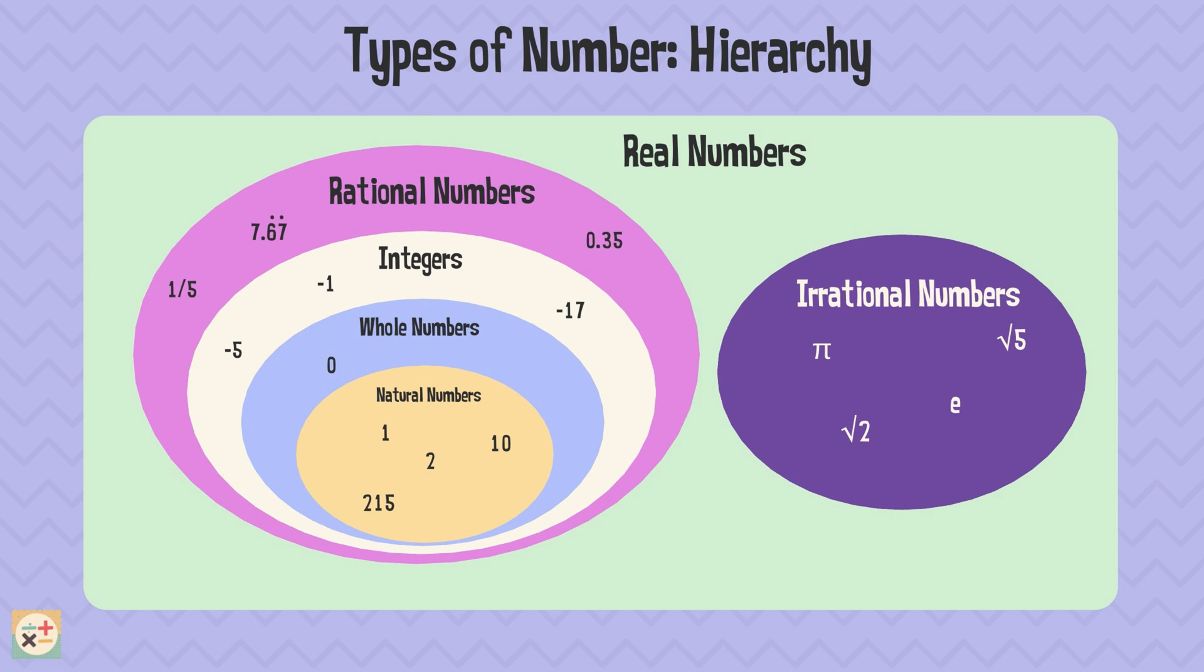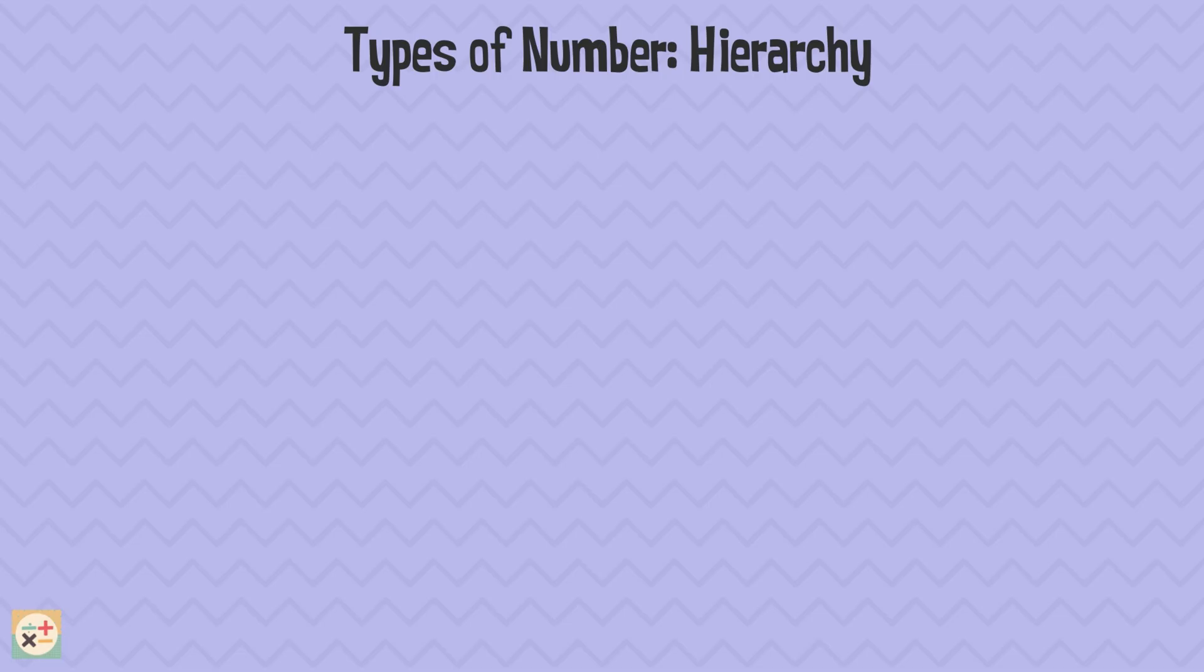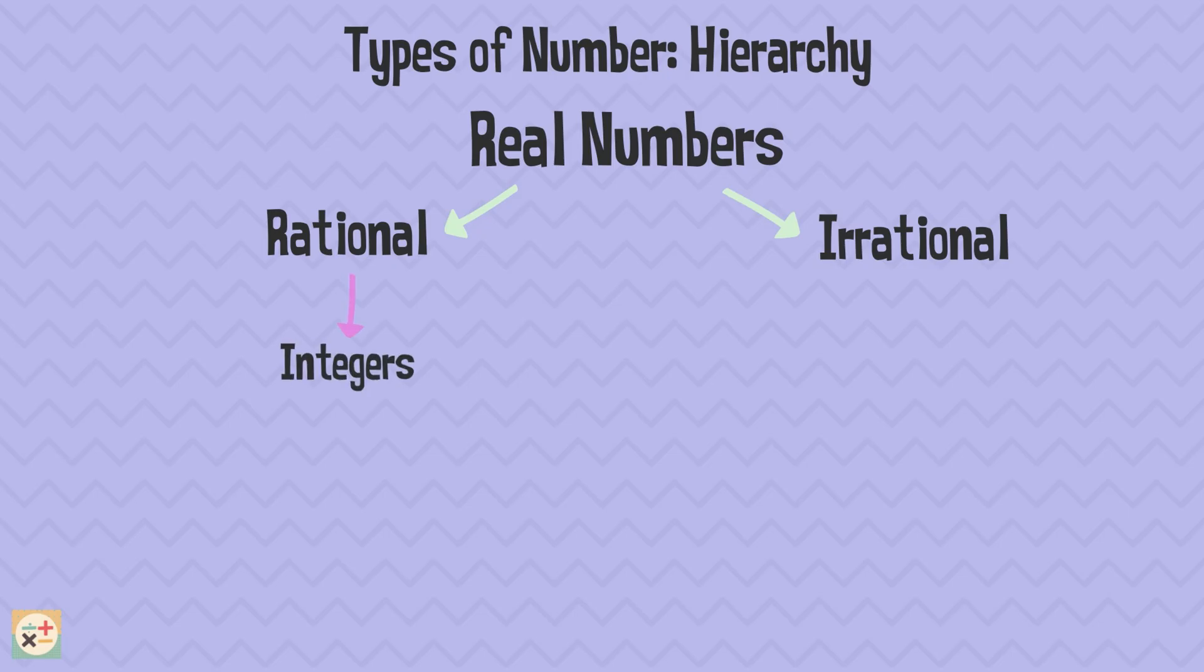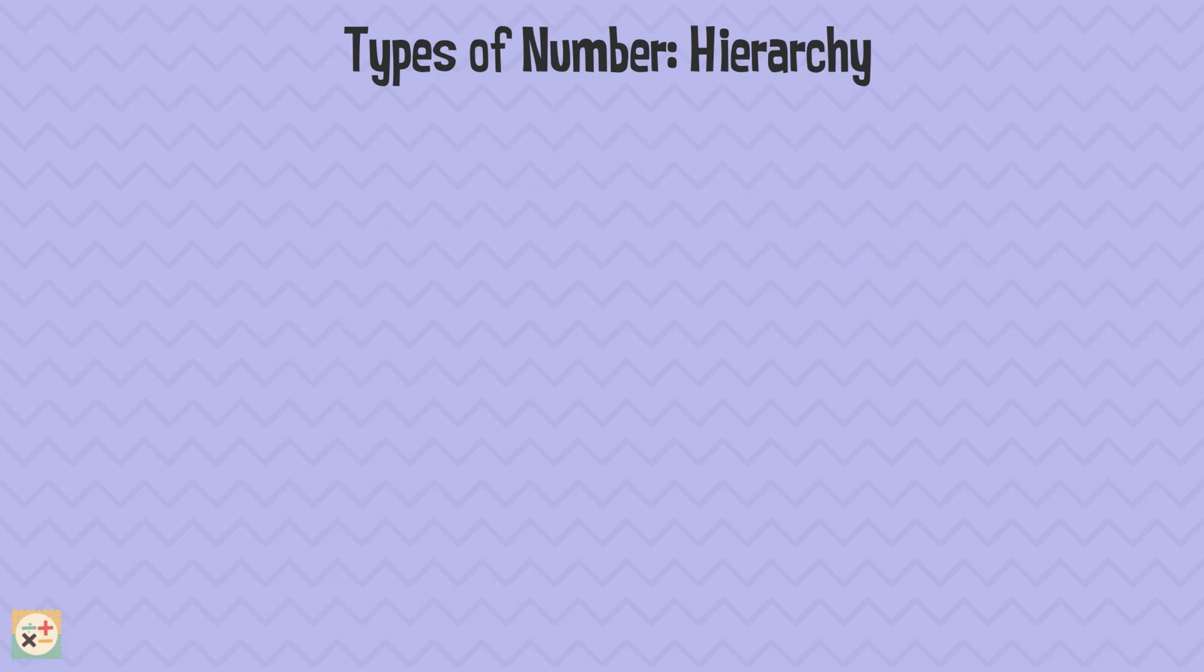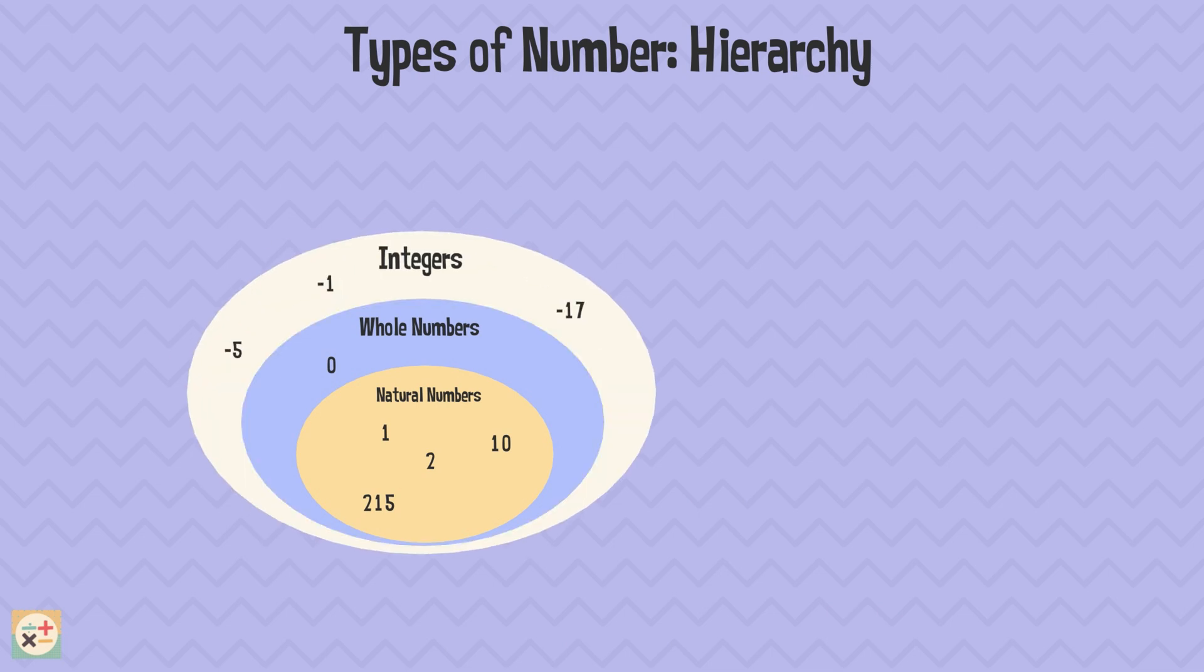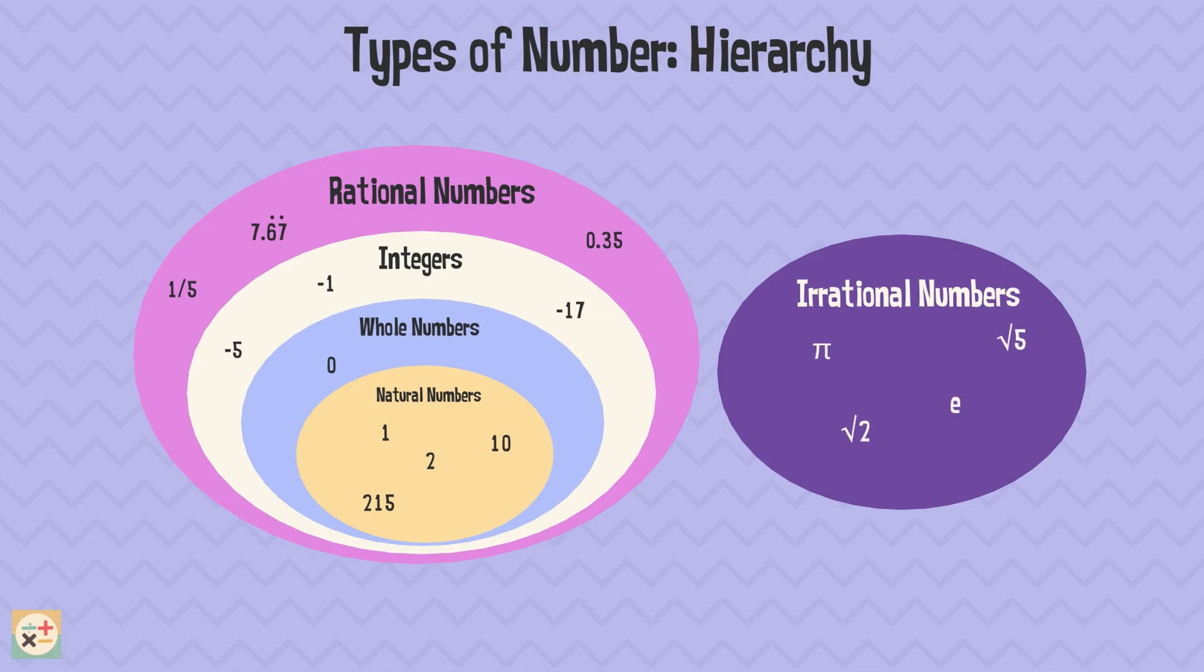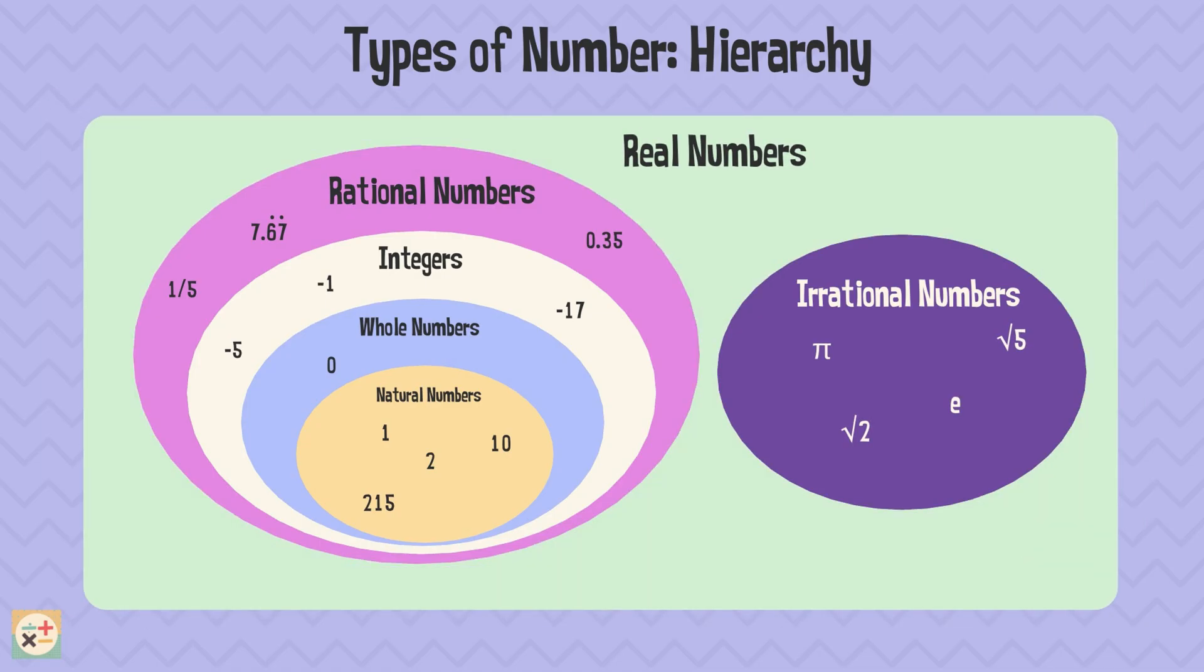Let's have a quick look at the hierarchy of the types of numbers we have covered today. Again, here is our diagram to summarize. We started with natural numbers, added zero to get whole numbers, included negatives to get integers, and then we moved on to fractions and decimals to get rational numbers. After that, we explored the endless world of irrational numbers. And finally, we wrapped it all up with real numbers.